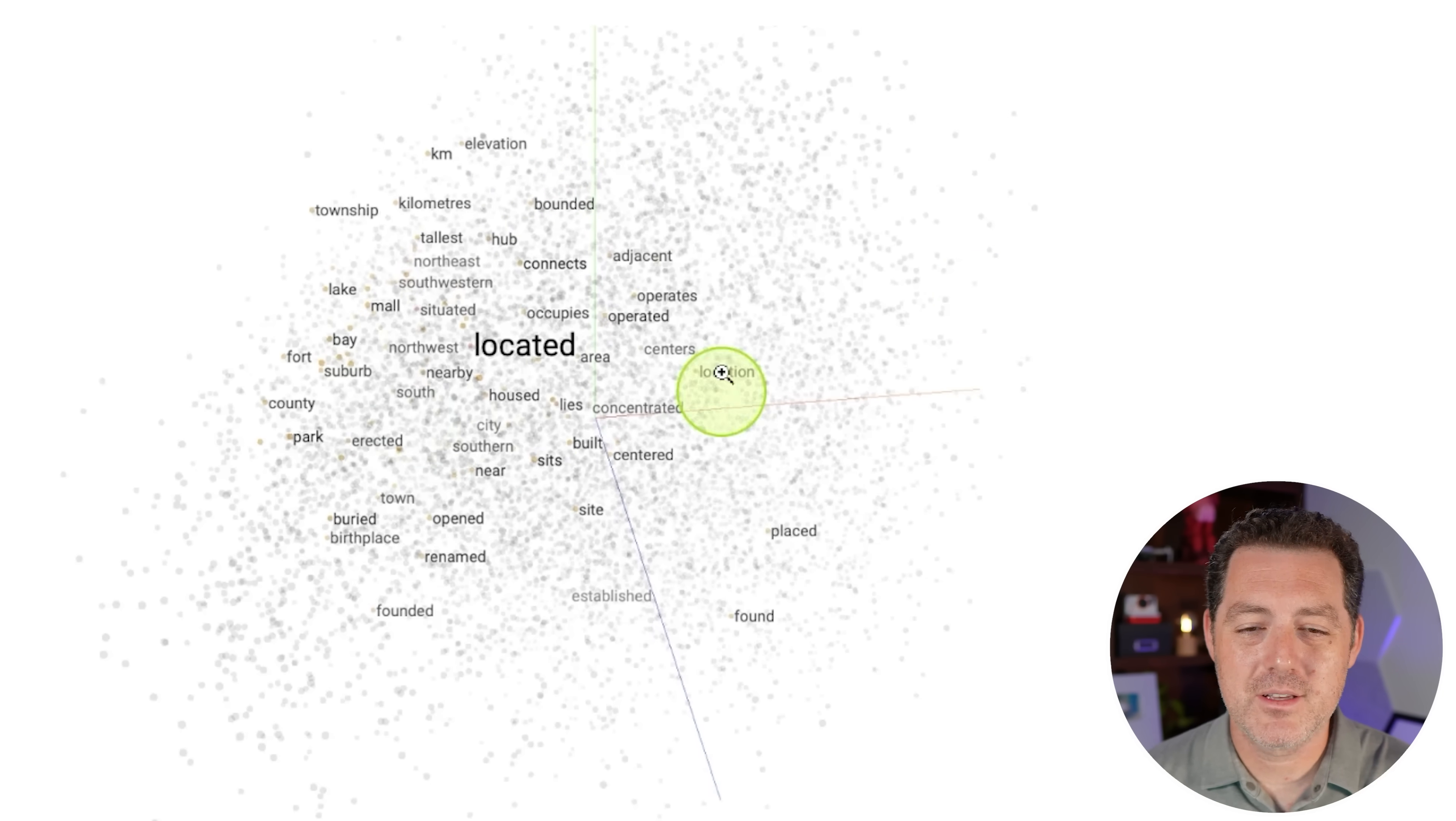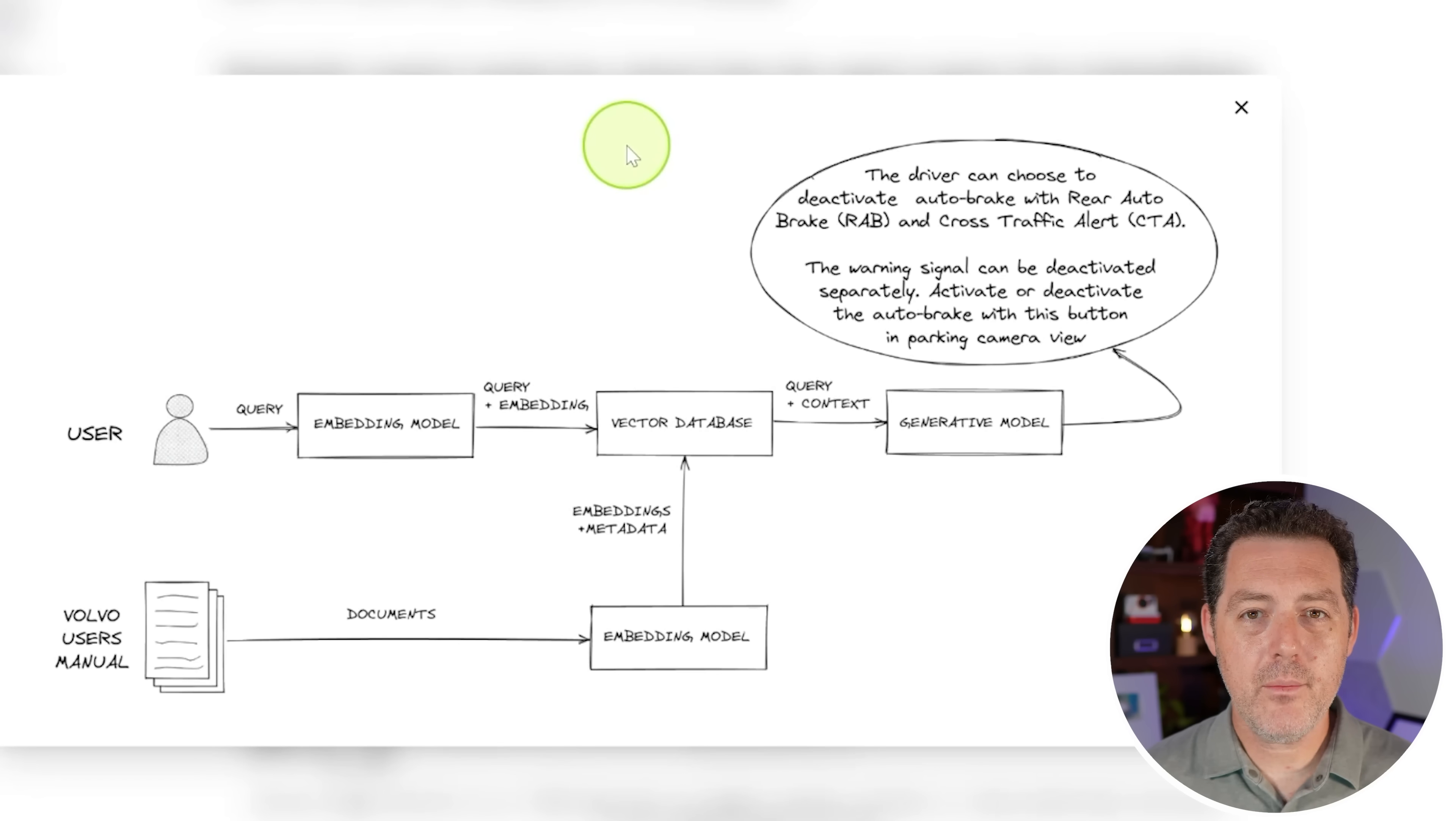So let's look here. So imagine this is part of the vector space. And we can see all of these words that are located near each other. So connects, occupies, operates, operated, bounded, elevation—all of these words are near each other in this vector space. And then what we do is we have now this intermediary step before we actually prompt the large language model.